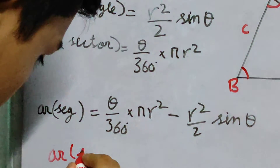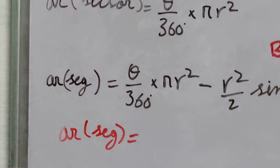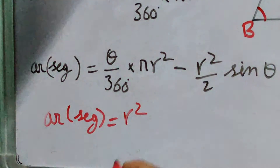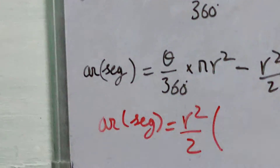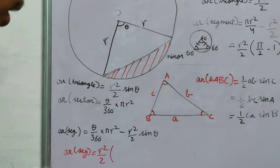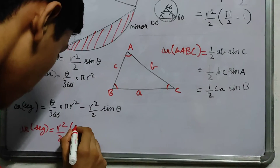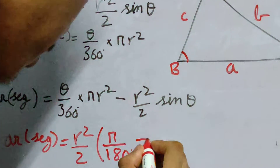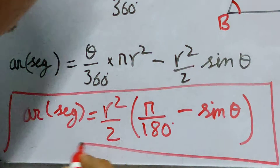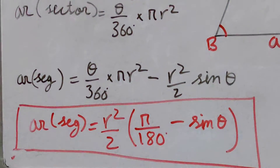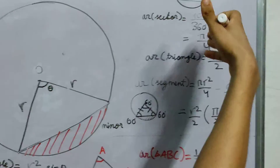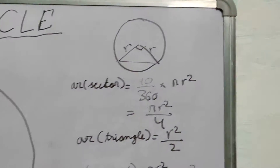Taking R²/2 common, the area of a segment simplifies to R²/2·(πθ/180 − sinθ). This is the general expression for the area of a segment. You can verify it is consistent with the special case of theta = 90 degrees: substituting gives R²/2·(90π/180 − sin90°) = R²/2·(π/2 − 1), which matches our earlier result.